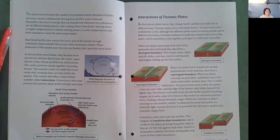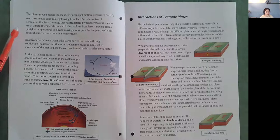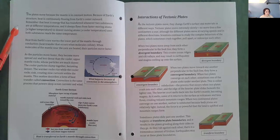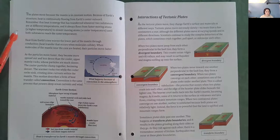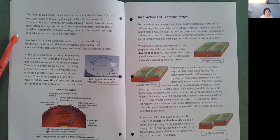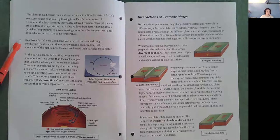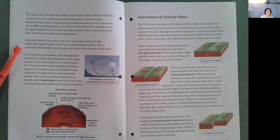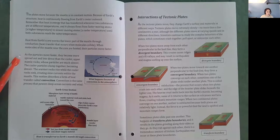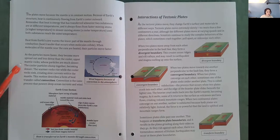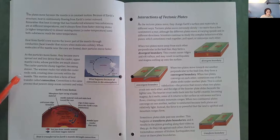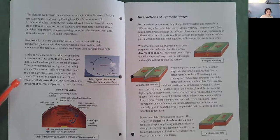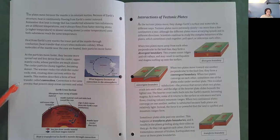The plates move because the mantle is in constant motion. Because of Earth's structure, heat is continuously flowing from Earth's center outward. Remember that heat is energy that is transferred whenever two substances are at different temperatures, and it always flows from faster-moving atoms, a higher temperature, to slower-moving atoms, a cooler temperature, until both substances reach the same temperature. Heat from Earth's core warms the lower part of the mantle through conduction, heat transfer that occurs when molecules collide. This motion describes a form of heat transfer called convection. Convection is the same process that powers deep ocean currents and winds.